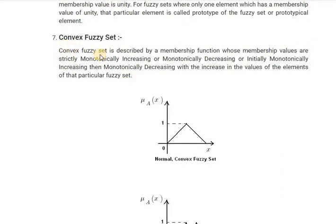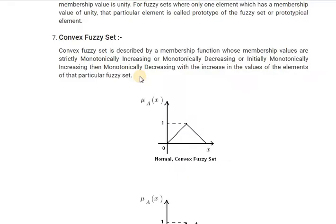Third type of set is convex fuzzy set. Let's see the definition. It is described by a membership function whose membership values are strictly monotonically increasing or monotonically decreasing. Look at this figure. A convex fuzzy set is described by membership function initially monotonically increasing and then monotonically decreasing. The definition is a bit confusing but it gives clear context of convex fuzzy set.